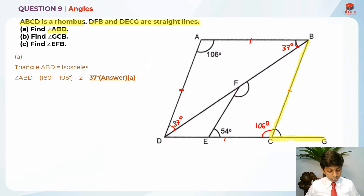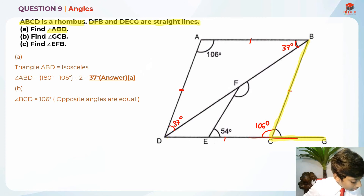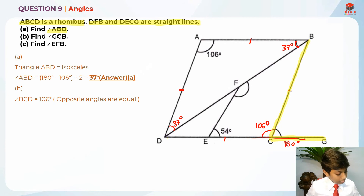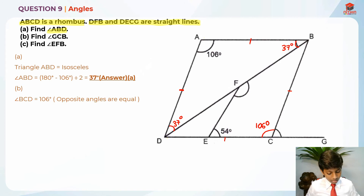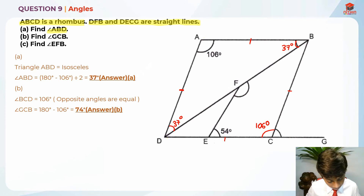We know that line DECG is a straight line, so the whole thing is 180 degrees. Therefore, 180 degrees minus 106 degrees gives us the answer. So angle GCB is 180 degrees minus 106 degrees, which gives us 74 degrees.